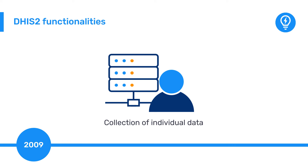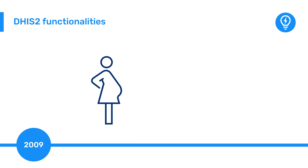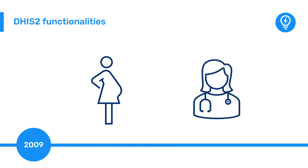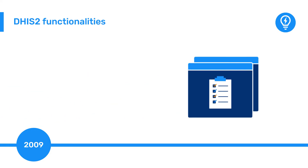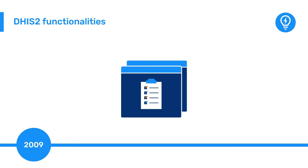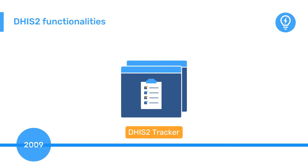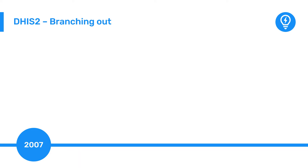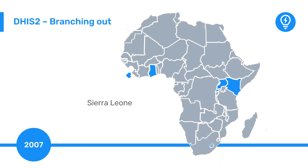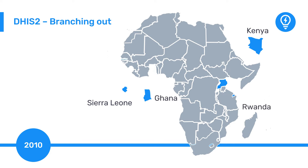This was in direct response to requirements in Kerala where prospective mothers were tracked through their antenatal care services. This individual data model eventually evolved into DHIS-2 Tracker. 2007 saw the first implementation of DHIS-2 in Africa, starting with Sierra Leone. This was followed in 2010 by Kenya, then Ghana, Rwanda, and Uganda.